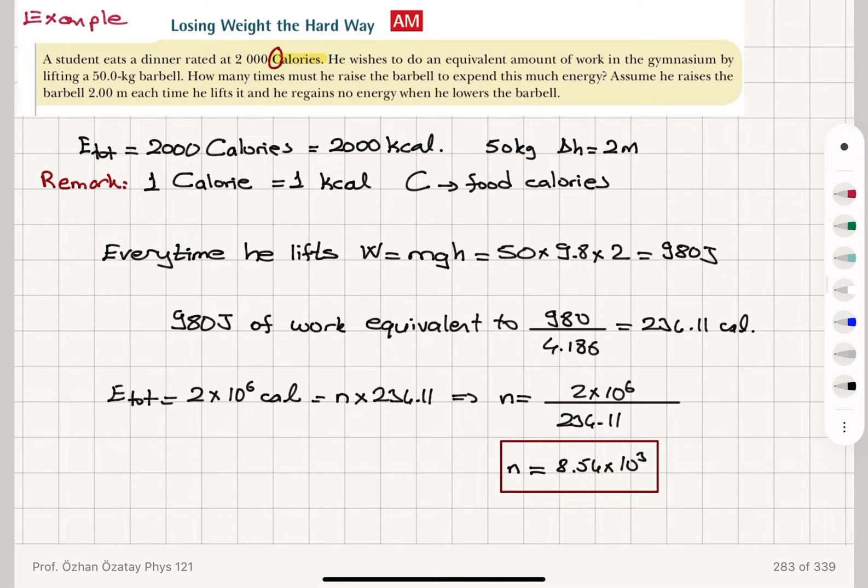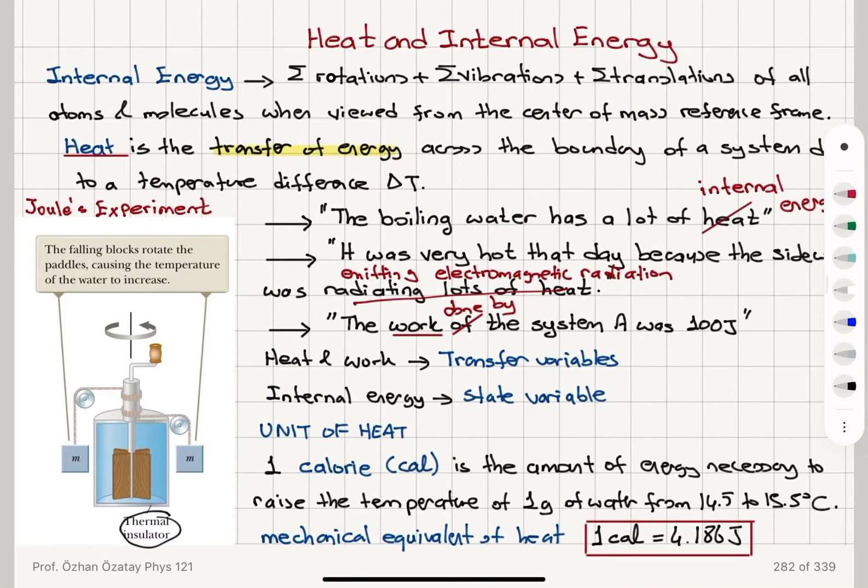So that's the amount of work we need to do. So we have to raise this barbell 8,540 times in order to make up for the high-calorie dinner that we had. So here we talked about the distinction between heat and internal energy.